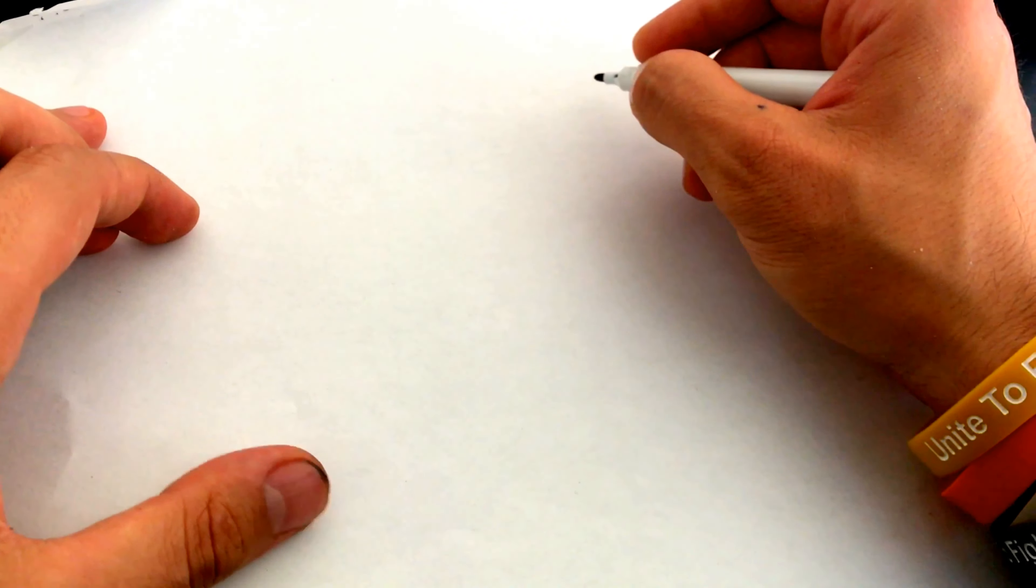To start out by drawing the mountain, you want to kind of find somewhere that you want to keep. Usually I like to choose somewhere around this area on the paper.